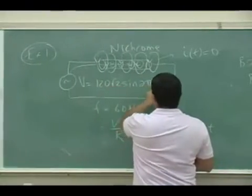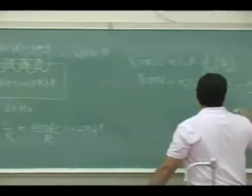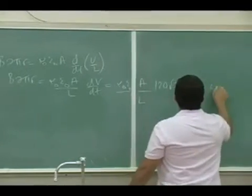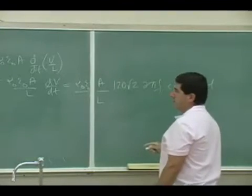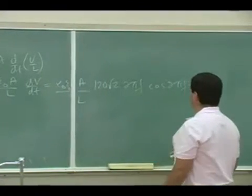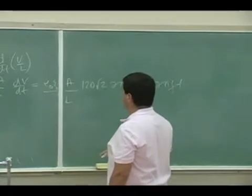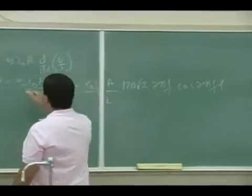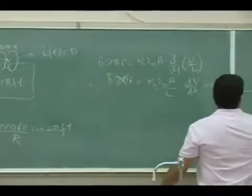120 radical 2, 2πf is going to come out, times cosine of 2πft. The derivative of sine is cosine, so 2πf comes out, and all of that, and then the 2π cancels with this 2π.